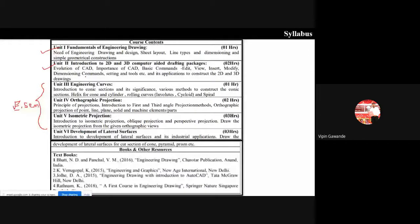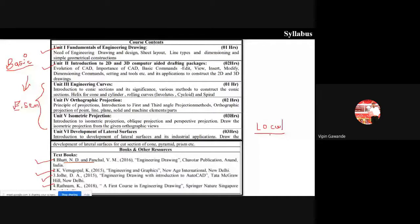Units one and two contain basic concepts, and until we know these basics we can't proceed to units three through six. Reference books include authors such as Vengopal, Dhule, and Ratnam - you can search these on the internet. I will post the recommended book on our Google Classroom, along with names of local books available in the market and a list of required drawing instruments.